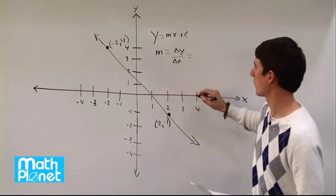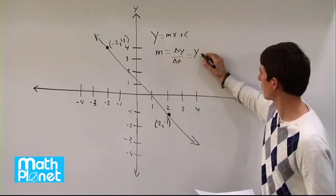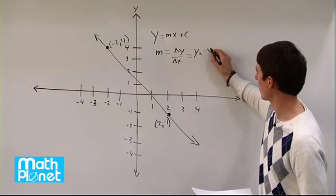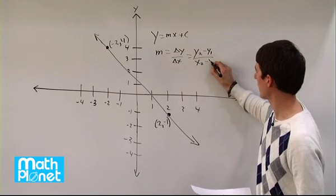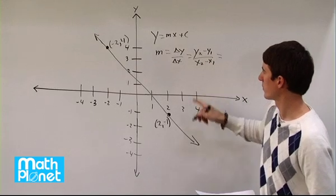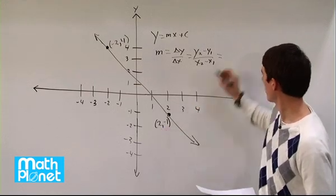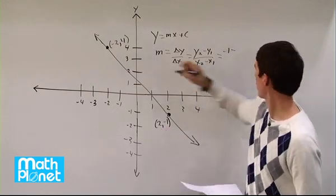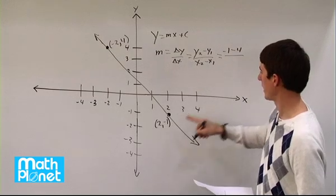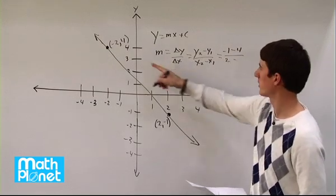which we can write as the difference quotient of y2 minus y1 over x2 minus x1. For this one, if we call this point one and this point two, then we have negative one minus four, and two minus negative two.